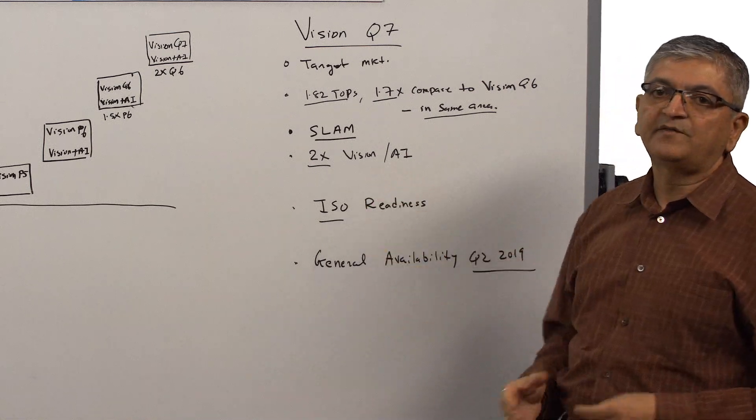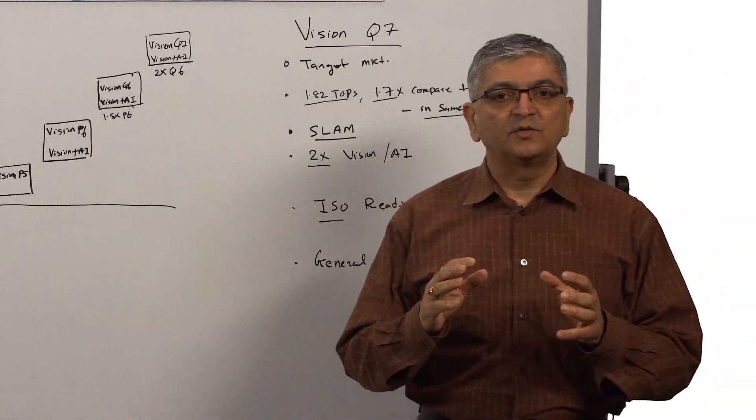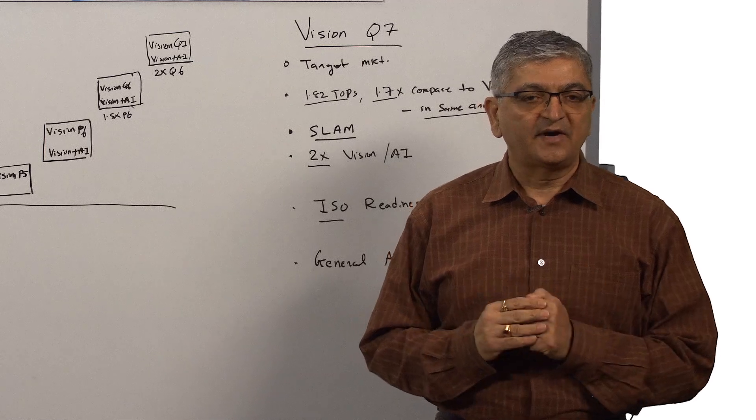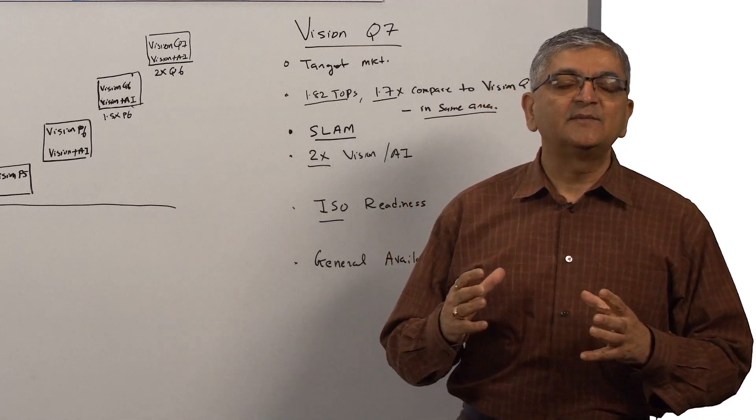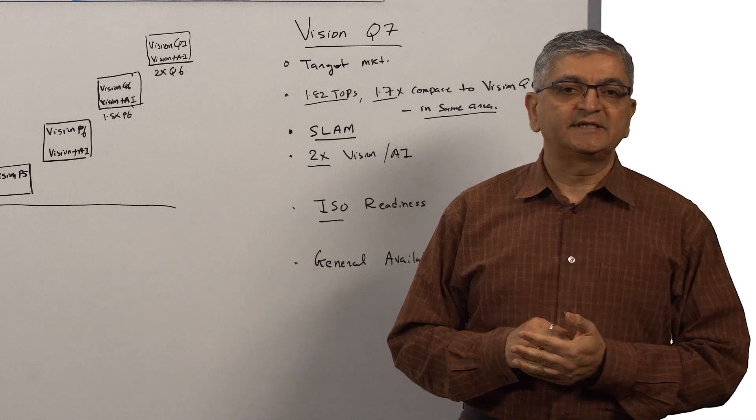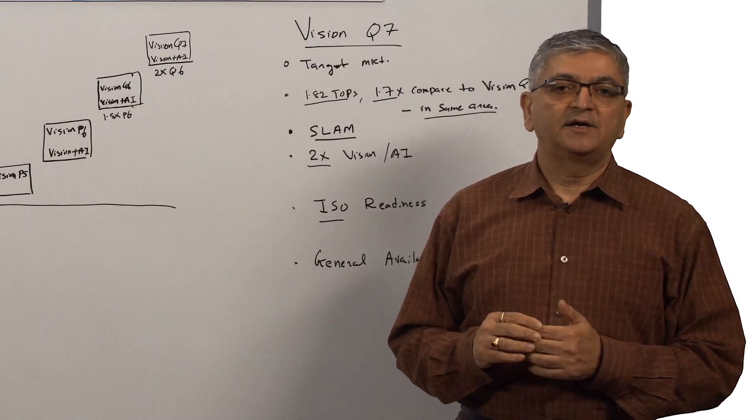With Vision Q7, we are offering 2x the performance for both Vision and AI. Specifically for AI, we are doubling 8-bit multipliers and accumulators, going from 256 to 512 8-bit multipliers.